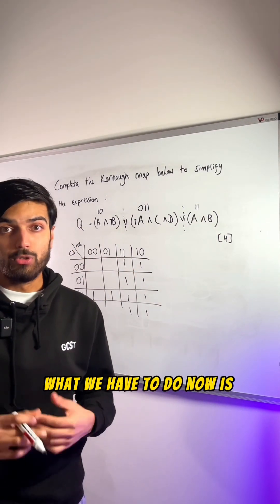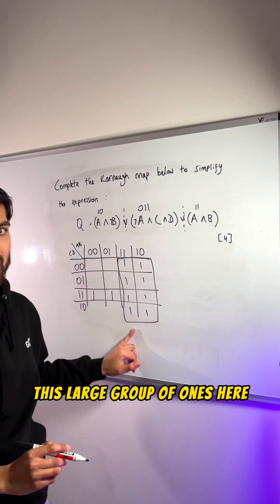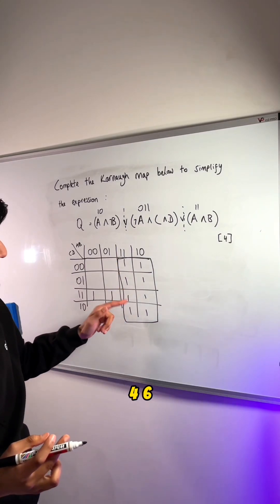What we have to do now is group. All we can see is that we can group this large group of 1s here. It satisfies the condition because it's a group of 2, 4, 6, 8.